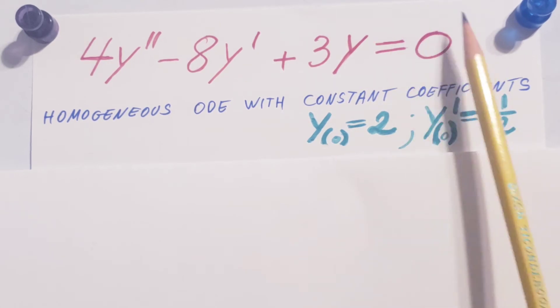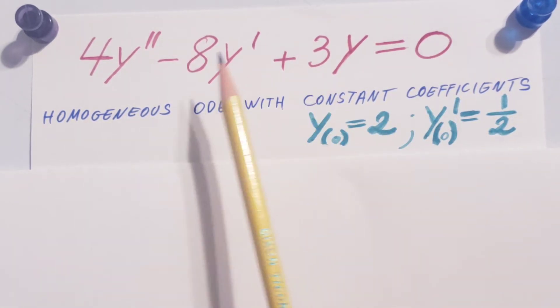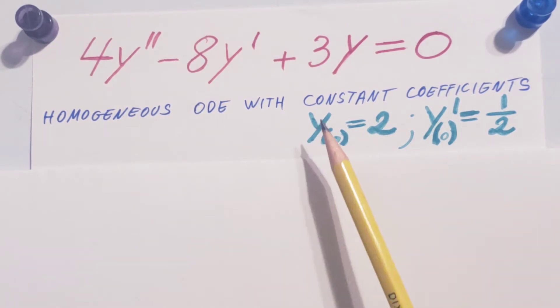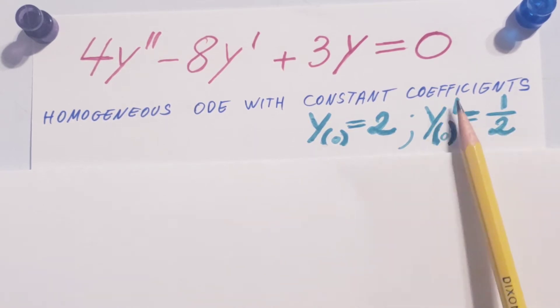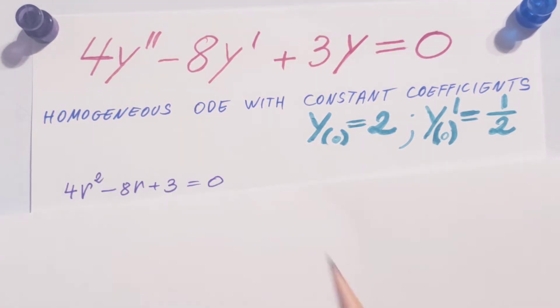Now this is a homogeneous ODE with constant coefficients. Homogeneous, there's nothing on the right-hand side, and we can see our constant coefficients. Now we also know that y at 0 is equal to 2 and y' at 0 is equal to 1.5. Now first step, let's write up our characteristic equation.